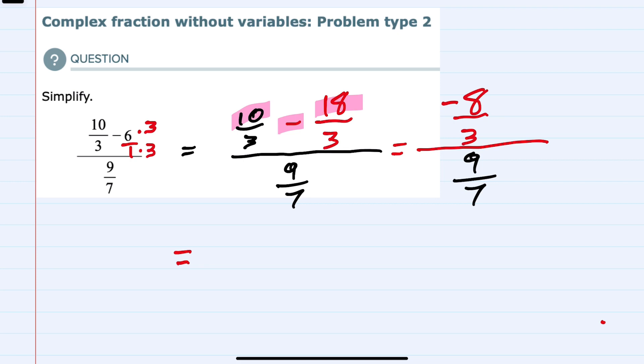we know that we can evaluate that by taking the numerator, minus 8 over 3, and instead of dividing by 9 sevenths, we would turn that into multiplication, and we would flip the denominator to make it 7 ninths.